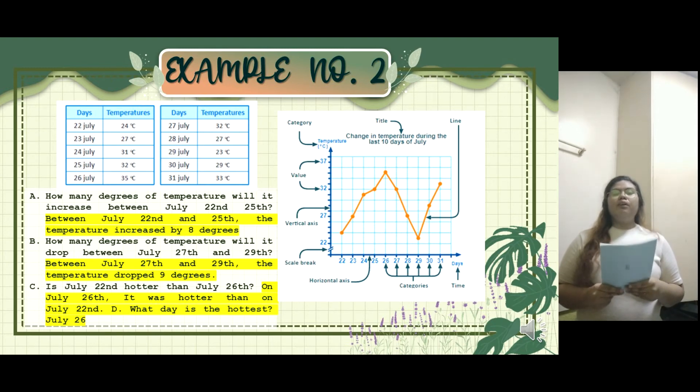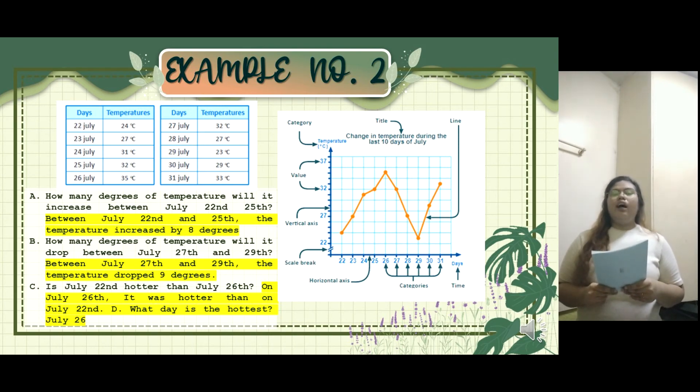We can make several interpretations based on this graph. So, as you can see on the left side of the graph, between July 22nd and 25th, the temperature increased by 28 degrees. Next, on the right side of the graph, the degrees of temperature dropped 9 degrees between 27th and 29th. Next, on July 26th, it was hotter than on July 22nd. Lastly, July 26th is the hottest day.